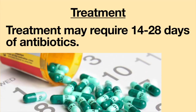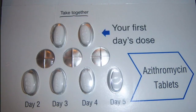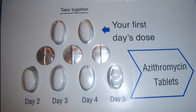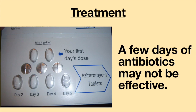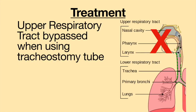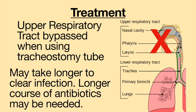Treatment of pneumonia in trached patients often requires a long course of antibiotics — 14 days to 1 month of antibiotics may be needed. Many physicians try to treat infections with just a few days of antibiotics, but from my experience, this is almost always ineffective at clearing my infection. Since the normal immune system is disrupted by the tracheostomy tube, it may take someone with a tracheostomy tube longer to clear a respiratory infection than someone without a tracheostomy tube. Thus, a longer course of antibiotics may be needed.